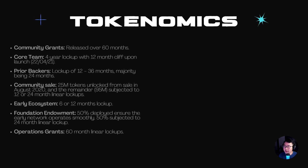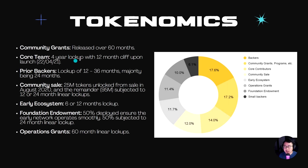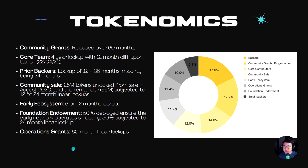Now let's explore the tokenomics. The community grants will be released over a 60-month period, so that's 5 years, which is pretty good. One important thing to note is that the lockup for the team is 1 year. They launched on the 22nd of April, so we should be looking out for the 22nd of April this year for the unlock — that's where the price might be volatile. The prior backers' lockup is majority 24 months, so that's still quite a long time away. For the rest of the tokenomics, you can pause this video to take a look.